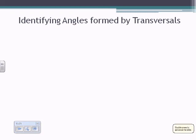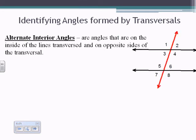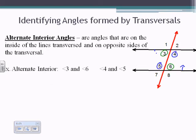Moving along to alternate interior angles: these are angles on the inside of the lines being transversed and on opposite sides of the transversal. Since 1 and 8, and 2 and 7 were alternate exterior angles because they were on the exterior, the interior ones are 4 and 5, and also 3 and 6.